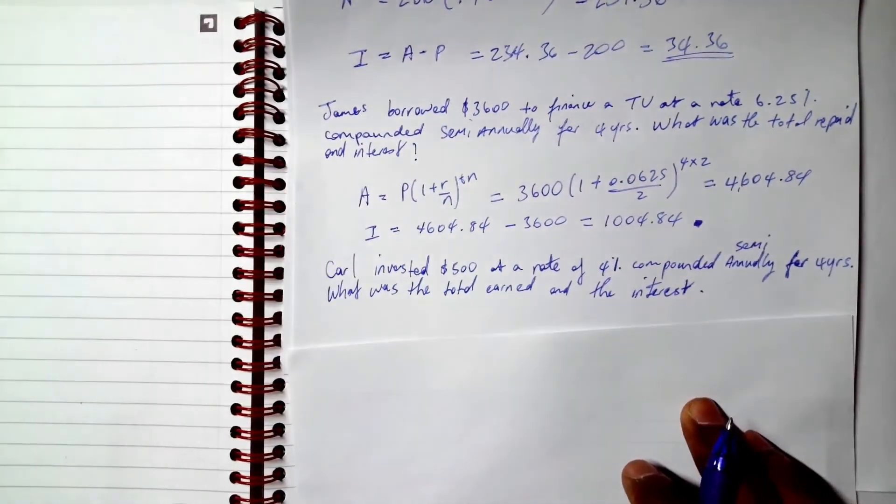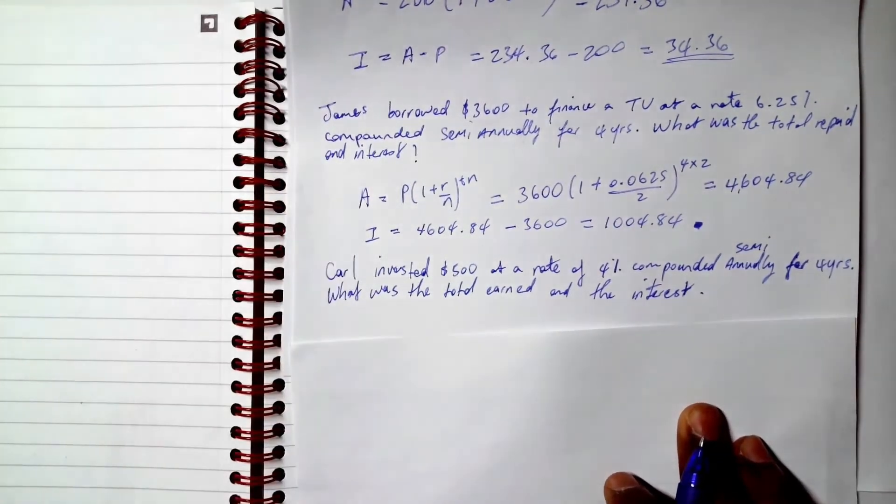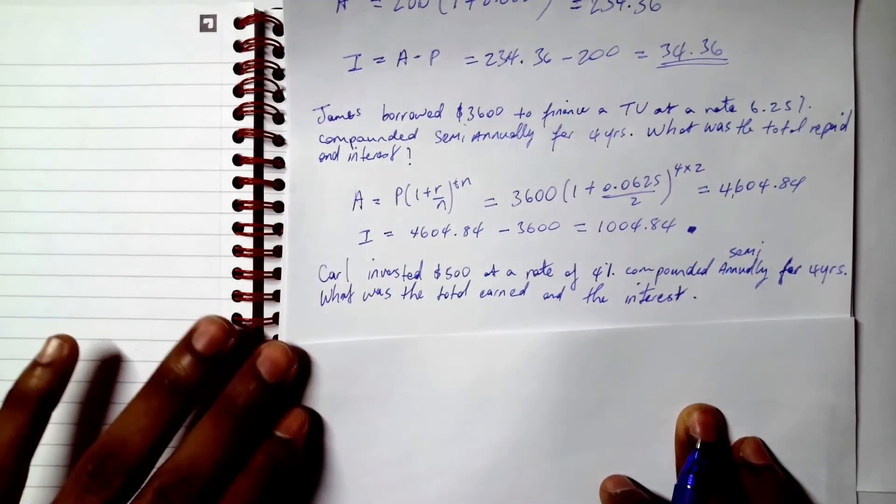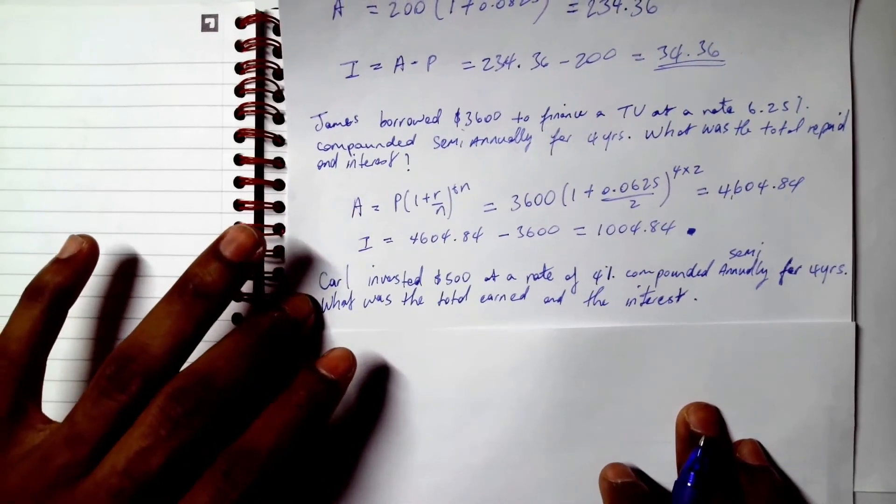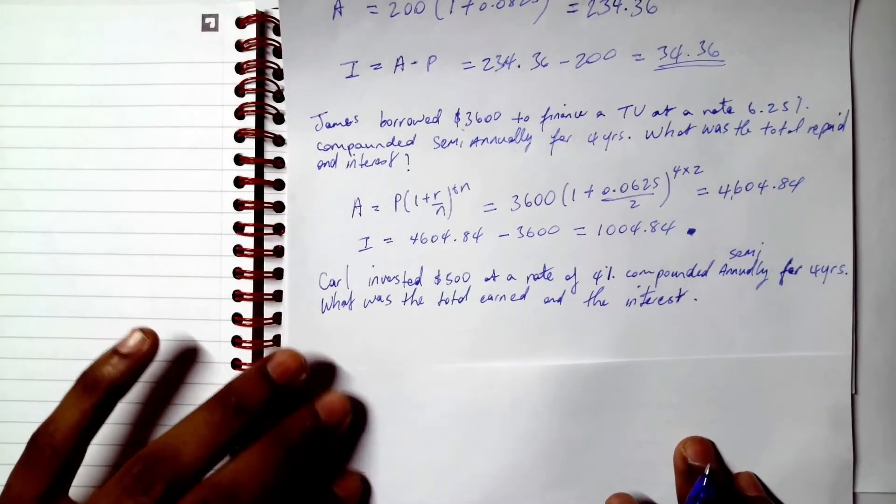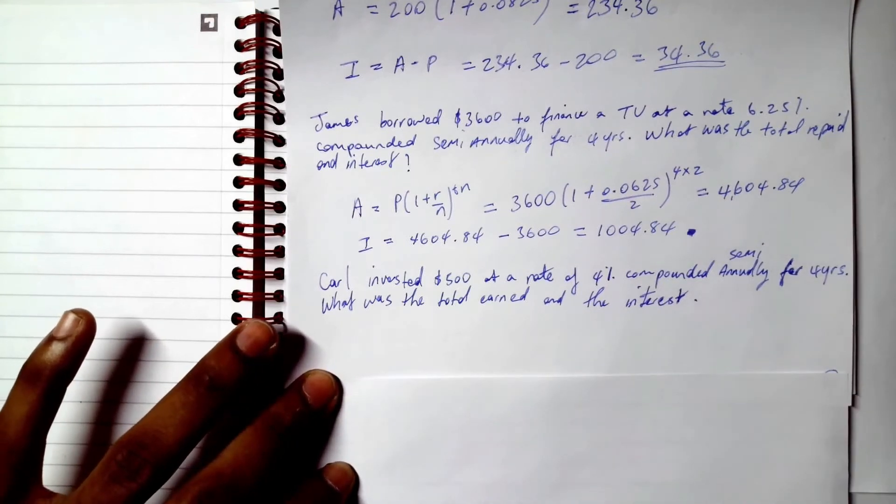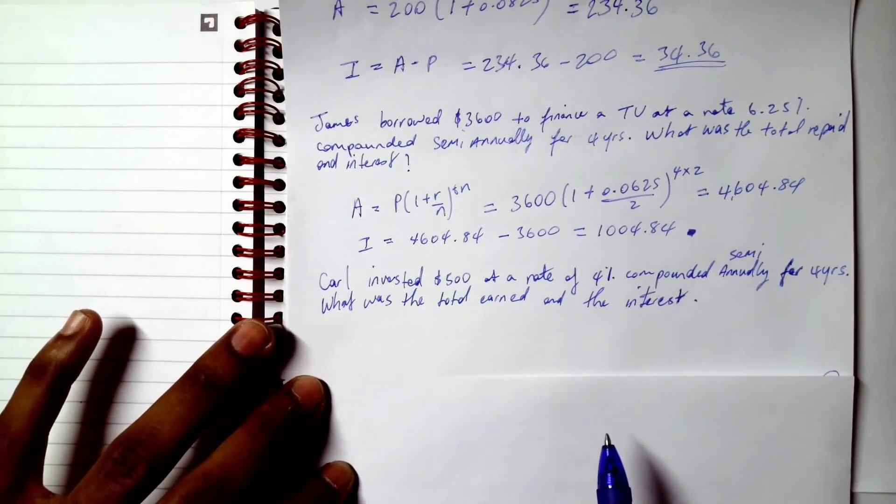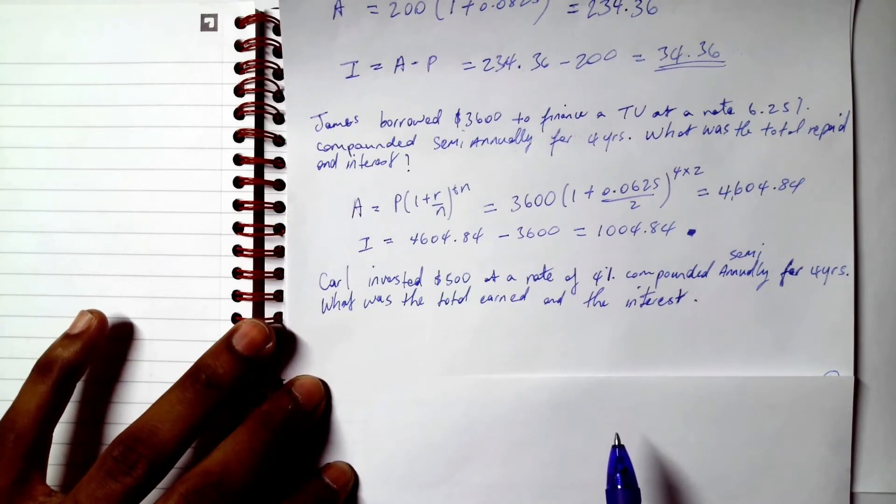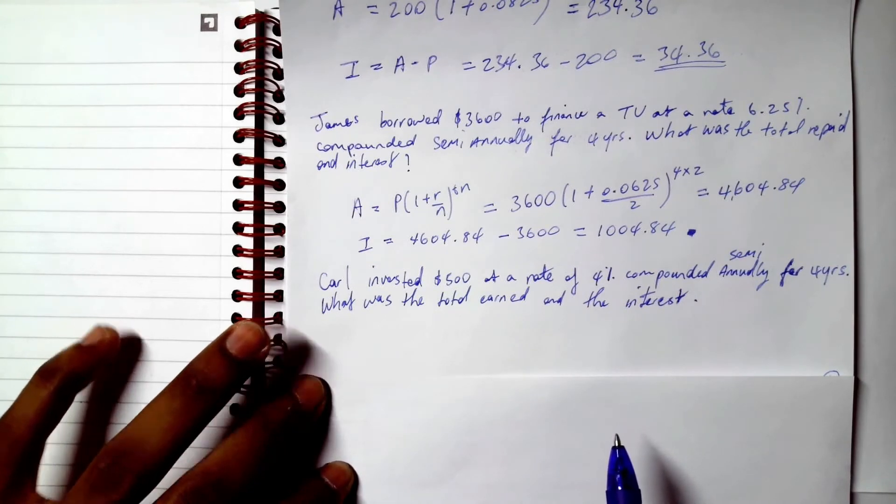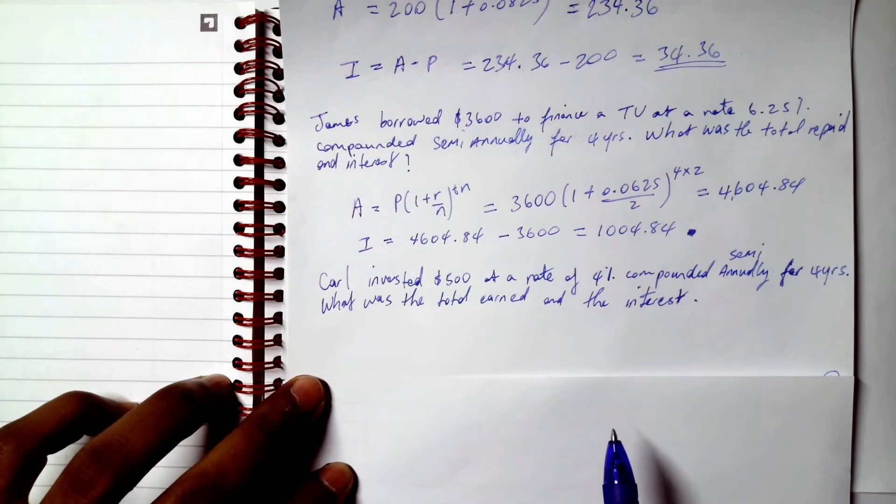All right, so for the next question we have Carl invested $500 at a rate of 4% compounded semi-annually for four years. What was the total earned and the interest? Basically exactly what we did above. Our n in this case will be 2 because our interest is compounded semi-annually, which is twice annually.